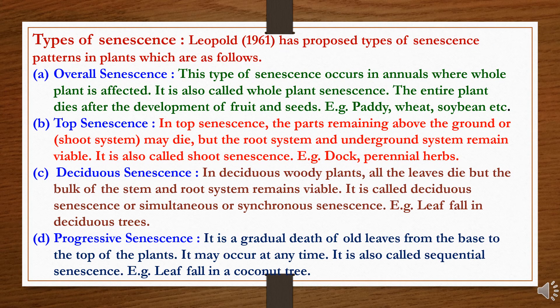We will now study about types of senescence as proposed by Leopold in 1961. The first type is overall senescence. This type occurs in annuals where the whole plant is affected. It is also called whole plant senescence — the entire plant dies after the development of fruit and seeds, like paddy, wheat, and soybean.